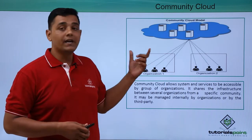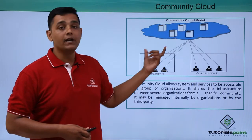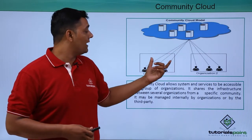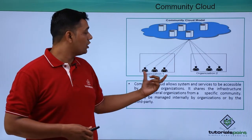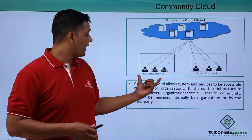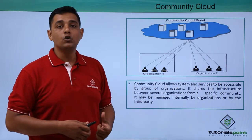In this diagram, we can see this is a Community Cloud. This Community Cloud will be accessed by two different organizations: Organization 1 and Organization 2.